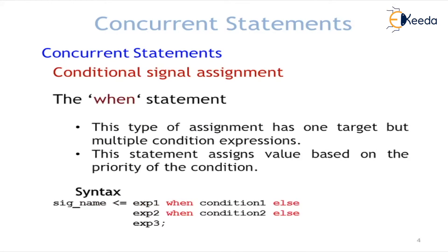There are another two important conditional concurrent statements: when-else and with-select. The when-else statement falls under conditional signal assignment. This type of assignment has one target signal. In the when-else statement there is only one target, but multiple conditions can be expressed. This statement assigns a value based on the priority of the condition.